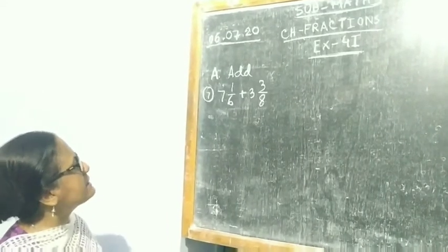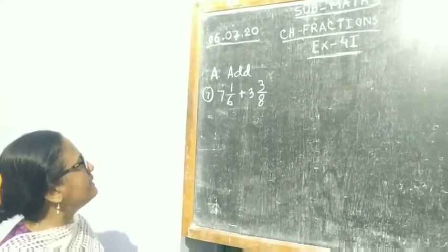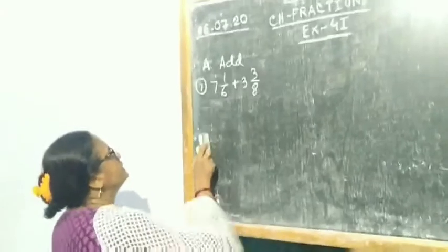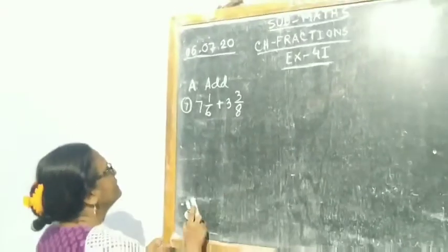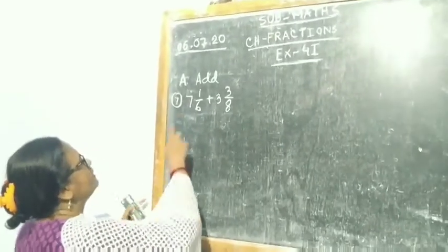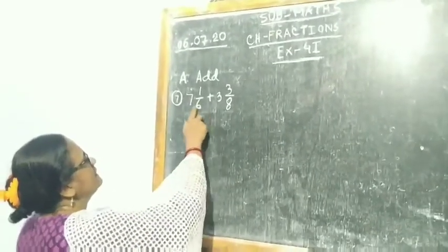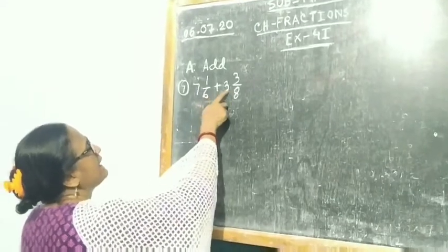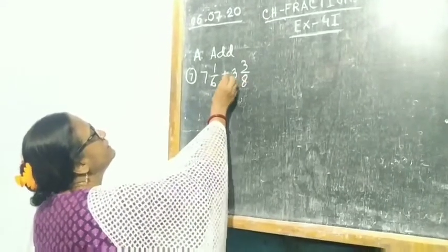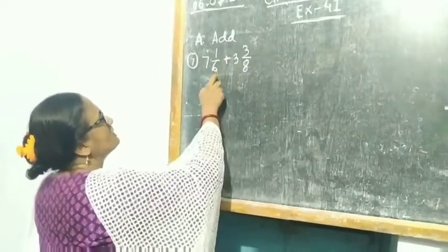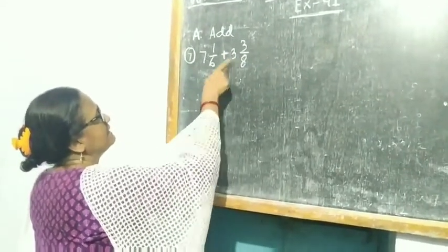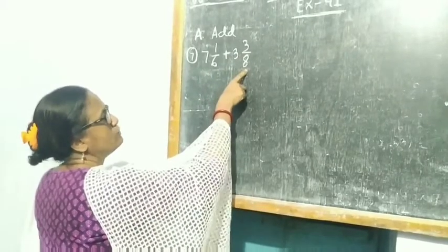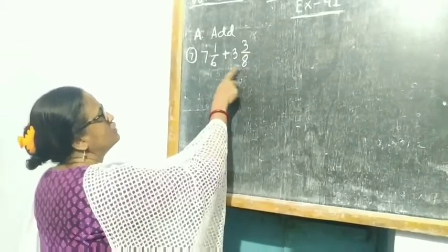Sum number 7: you have to add 7 1/6 plus 3 3/8. So 7 1/6 and 3 3/8 are 2 mixed fractions.